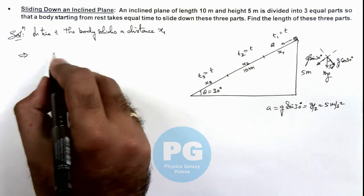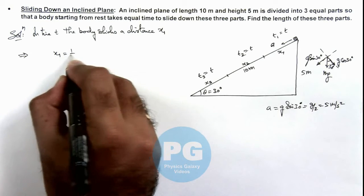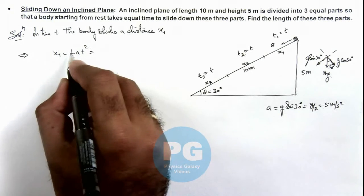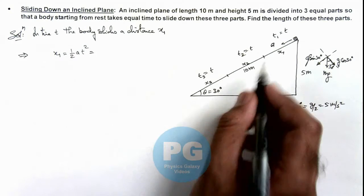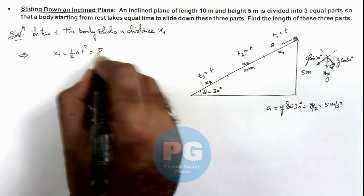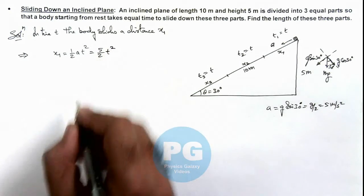In this situation here, x1 we can write as half a_y t squared. The value of a_y we are having is 5, so this can be written as 5 by 2 t squared.